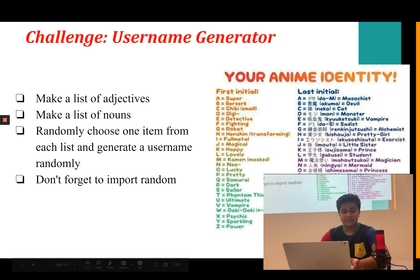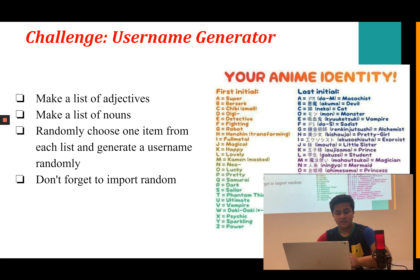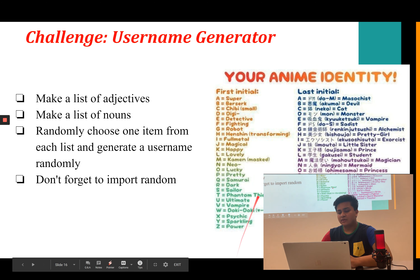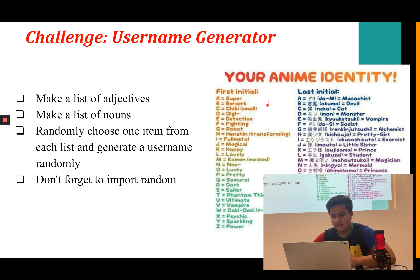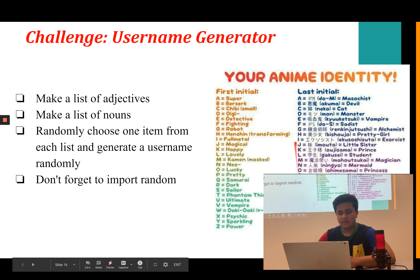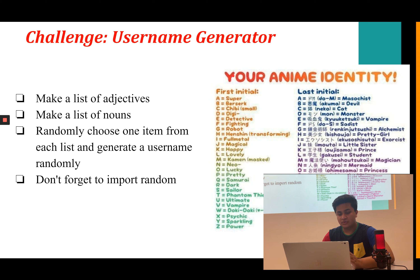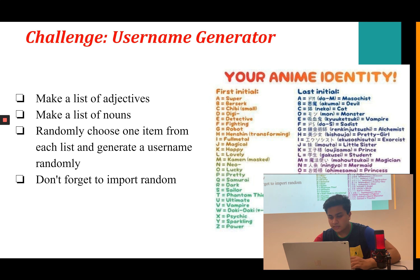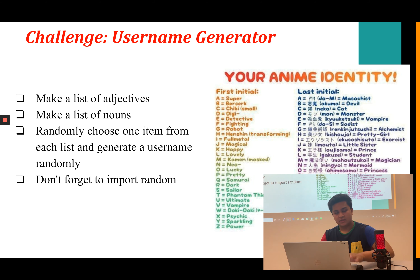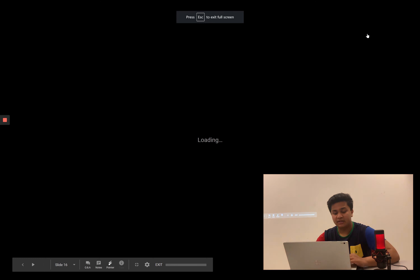The next challenge is a progress check — Username Generator: make a list of adjectives and a list of nouns, then use the random module to choose one random item from each list and combine them into a randomly generated username. An example is shown with adjectives and nouns. This is a progress check challenge — good luck.